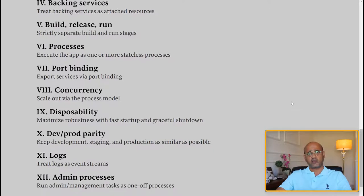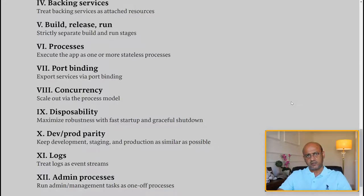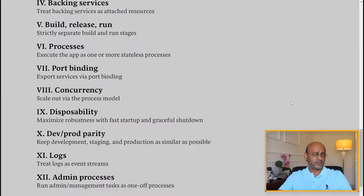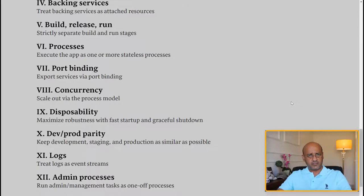Factor six is processes: execute the app as one or more stateless processes. Stateful and stateless are two important concepts in software development — check out my video on that. Factor seven is port binding: export services via port binding. Typically APIs are used at a later stage to tie in the different services, whether you're in AWS or any other cloud platform.